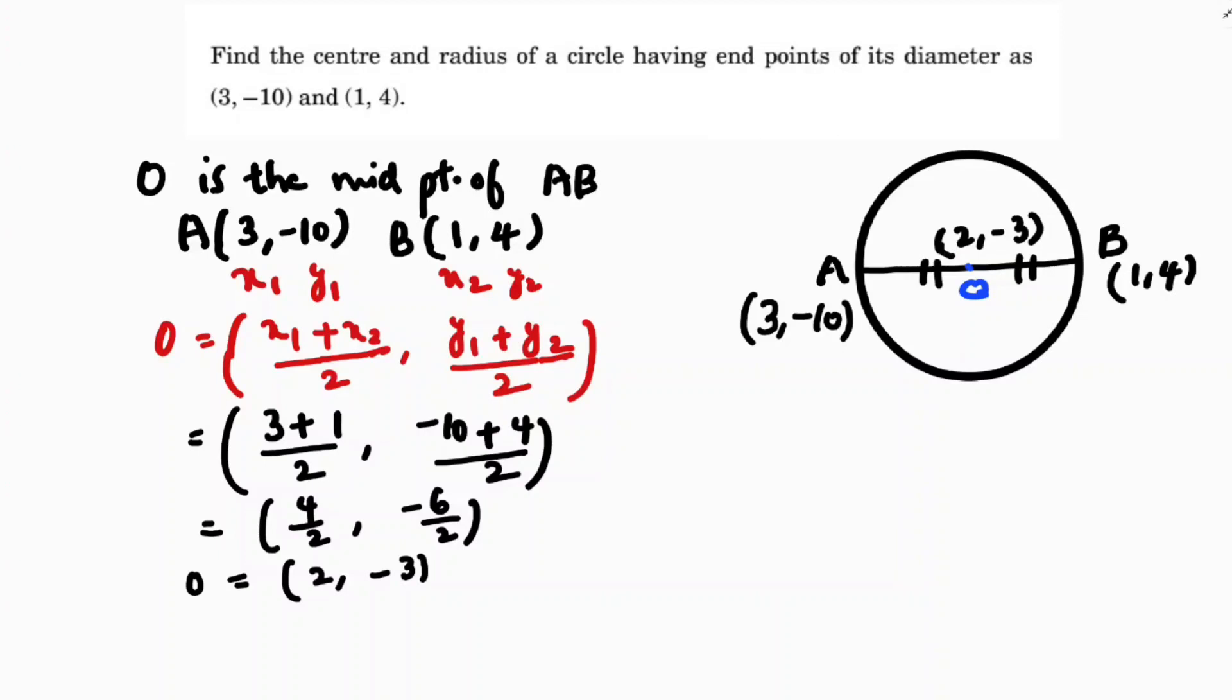Now we need to find the radius. There are two methods. One, you can find the distance between A, B and you need to make it half. Or you got the center O, you can find OA distance or OB distance. That will be the radius.